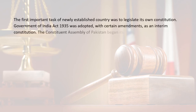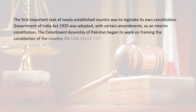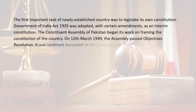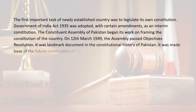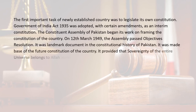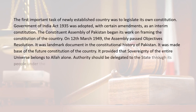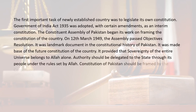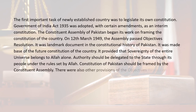The first important task of the newly established country was to legislate its own constitution. The Government of India Act 1935 was adopted, with certain amendments, as an interim constitution. The Constituent Assembly of Pakistan began its work on framing the constitution. On March 12, 1949, the Assembly passed the Objectives Resolution — a landmark document in the constitutional history of Pakistan. It was made the base of the future constitution. It provided that sovereignty of the entire universe belongs to Allah alone, and that authority should be delegated to the state through its people under the rules set by Allah. The constitution of Pakistan should be framed by the Constituent Assembly.